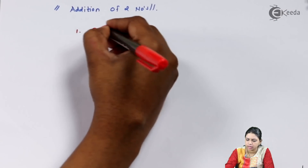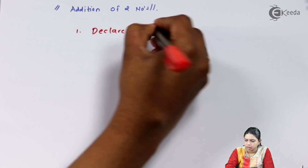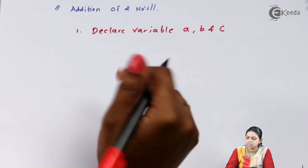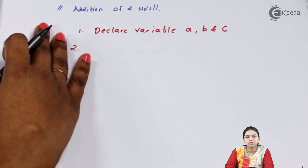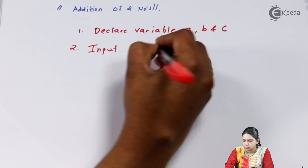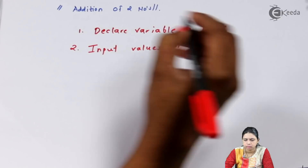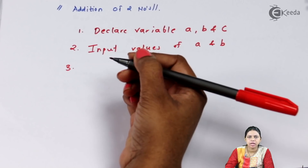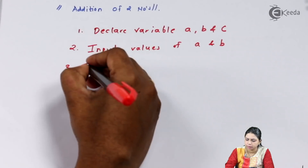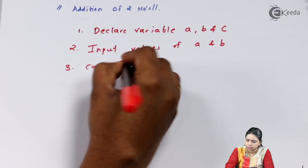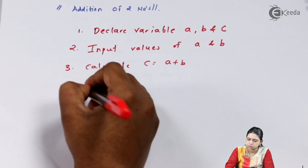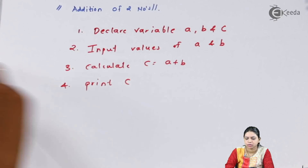Step one: declare variables A, B, and C. Step two: input values of A and B. Step three: calculate C, where C = A + B. Step four: print C. This is how I write an algorithm for addition of two numbers.